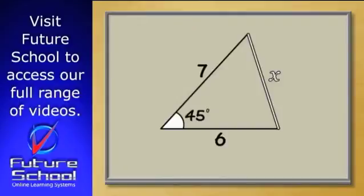For example, we might want to find the length of the third side of a triangle when we've been given the lengths of two of the sides as 6 and 7 units, and the angle between those sides as 45 degrees.